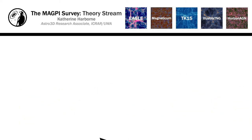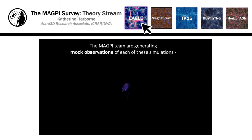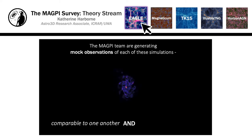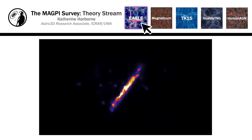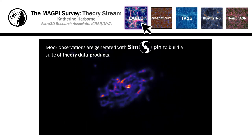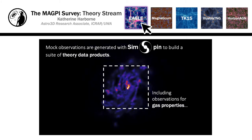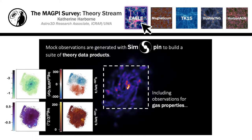It's important that we make these comparisons consistently. To do so, we're building mock observations for all simulated galaxies, such that we can compare to one another and our Magpie observations. We are using the open source code SIMSPIN to create these mocks and plan to generate a full suite of theory data products for release.